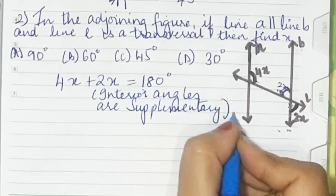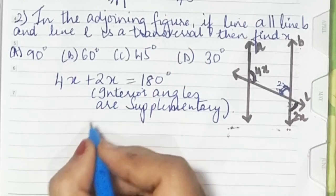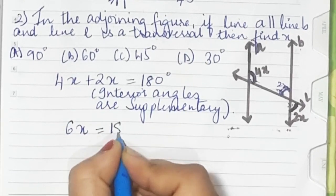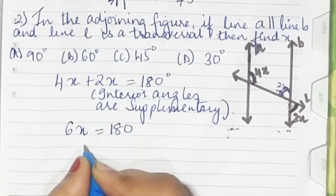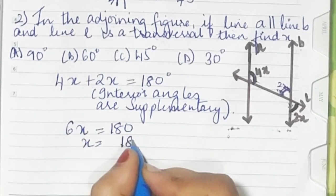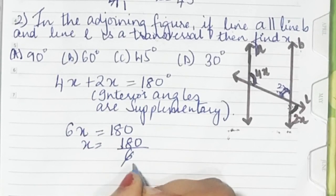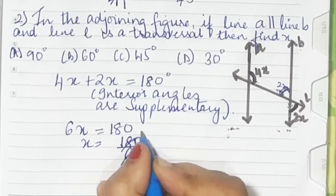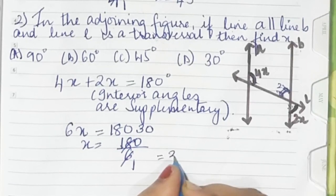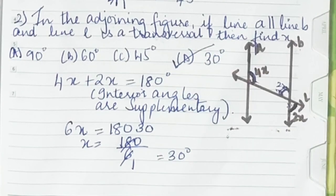So 4x plus 2x is equal to 180 degrees because interior angles are supplementary. That gives 6x equal to 180, so x is equal to 180 divided by 6, which equals 30 degrees. So d is the correct option.